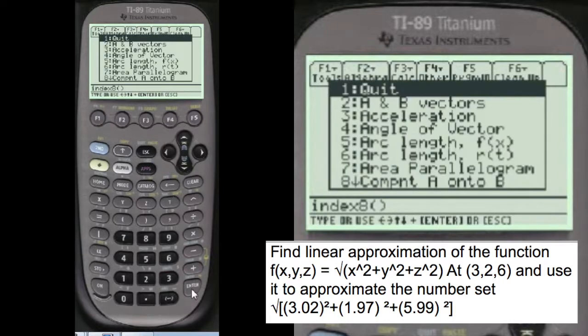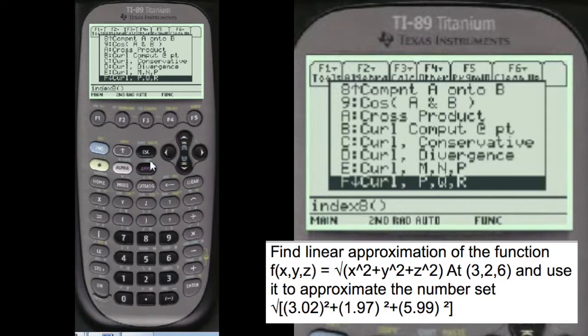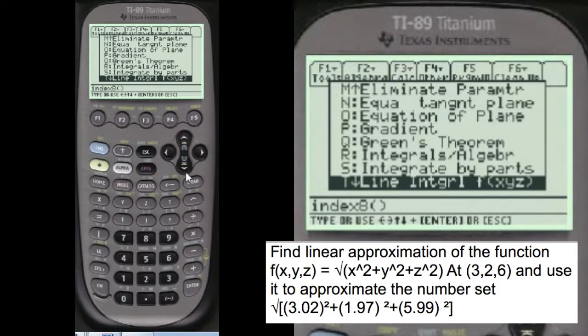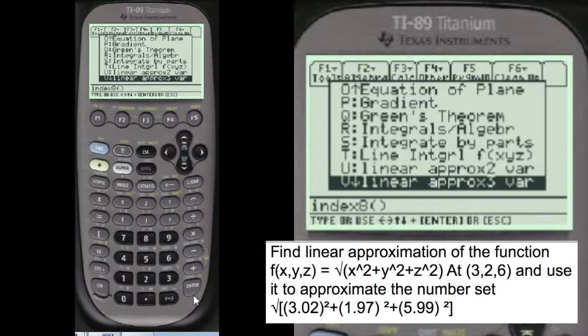Index 8 to get to my menu. You can press 2nd and the cursor here to go down screen by screen to get down to the L section where linear approximation is. Three variables.